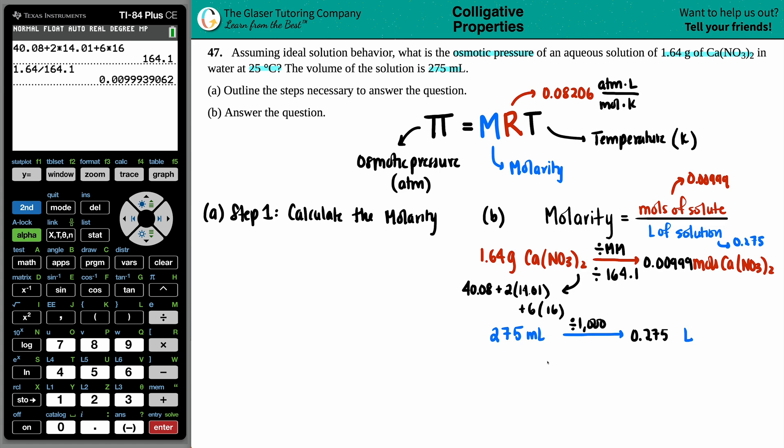And now let's solve for the molarity. Capital M equals 0.00999 divided by 0.275. So I'm going to take that number, divide it by 0.275, and I get a molarity of 0.0363. That's good enough for me.